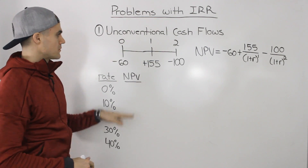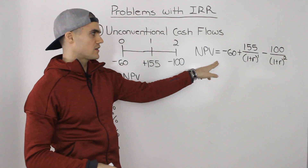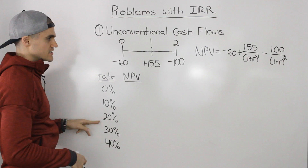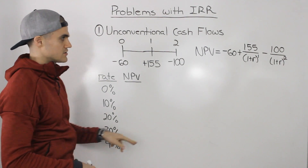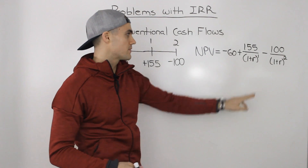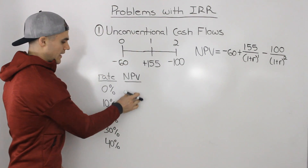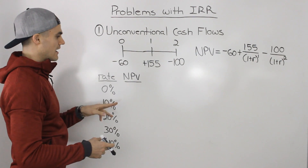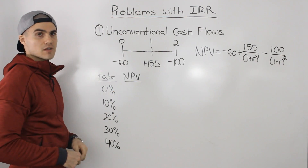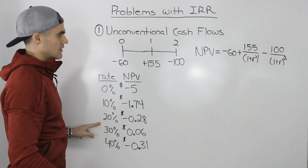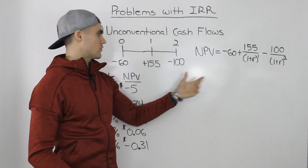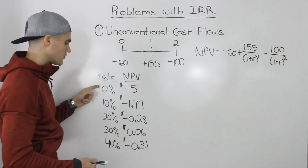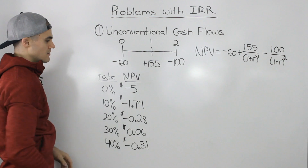Like in the last video, I'm going to take these cash flows, apply the general NPV formula, and try a couple of different discount rates. I'll plug these discount rates into the R in the formula in decimal form and see what the NPV is, so we can see what kind of relationship this project's cash flows have in terms of rate and NPV. You can input these rates into the formula or into a financial calculator and compute the NPV.